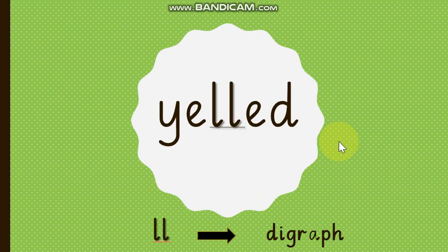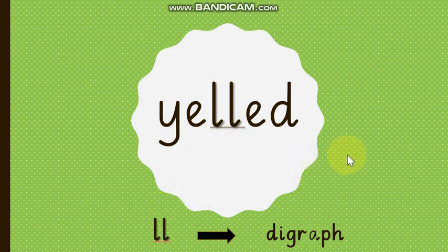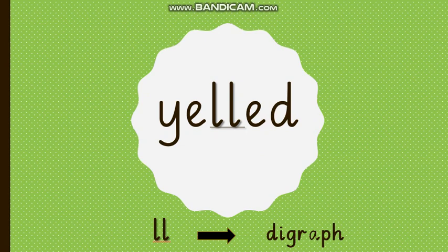The next and the last word is YELLED. You can see a digraph here which is LL — double L — two letters, one sound. Let's read it with the sounds: Y, E, LL, D — yelled. The word is YELLED.